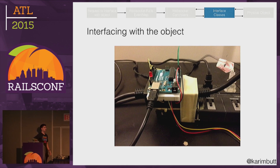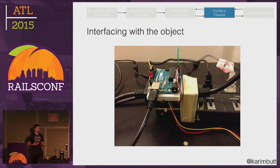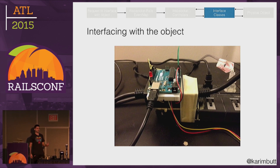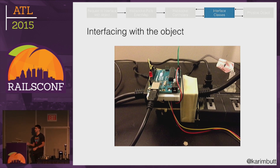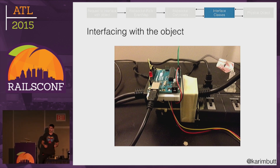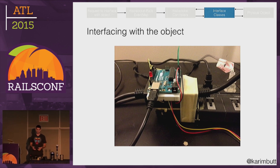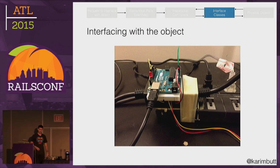The interface classes are the most interesting and fun part to build in this application — they're the glue between the Rails app and the actual physical object. Interface classes are really easy to build for smart objects like a Sonos or LIFX light bulb, because there are lots of APIs, gems, official and unofficial ones available. Where it gets a little trickier but also more fun is dumb objects not connected to the Internet, where you have to use the Arduino's library and do a little circuitry — but it's actually really easy. I'm not a circuits guy at all, so if I can figure it out, anybody can.